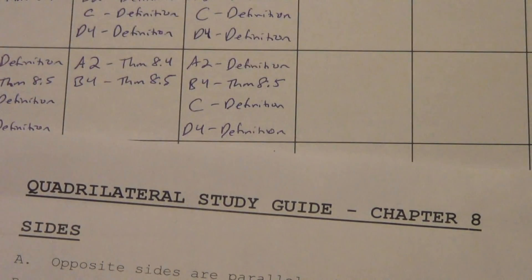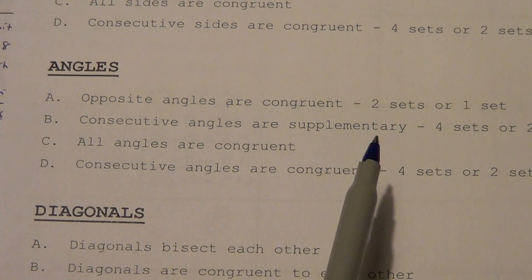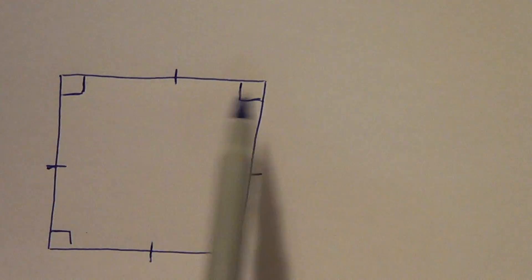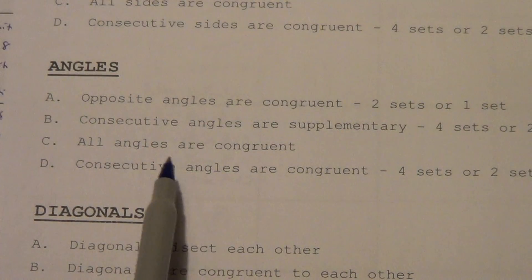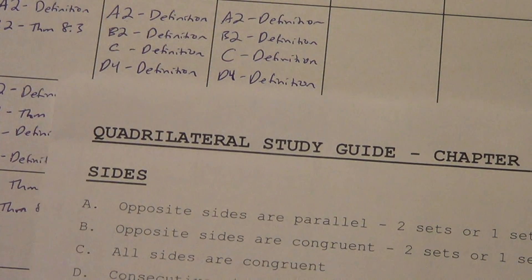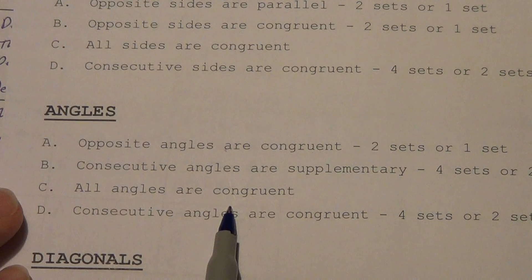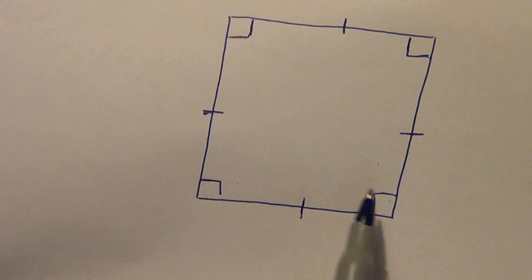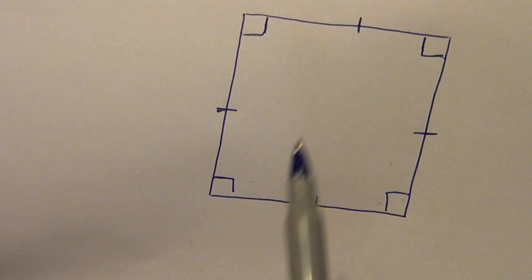Angles: A2 by definition — opposite angles are congruent. Right angle congruent to a right angle, right angle congruent's theorem. Consecutive angles are supplementary: 90 plus 90 is 180 — four sets, that's why it says B4. All angles are congruent — they're all right angles. Consecutive angles are congruent — four sets.